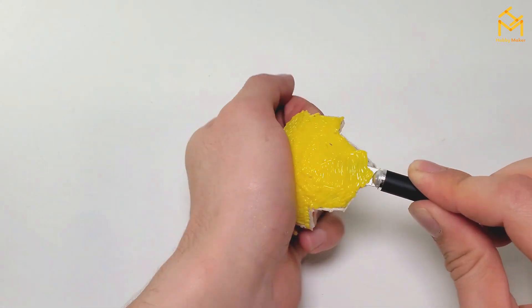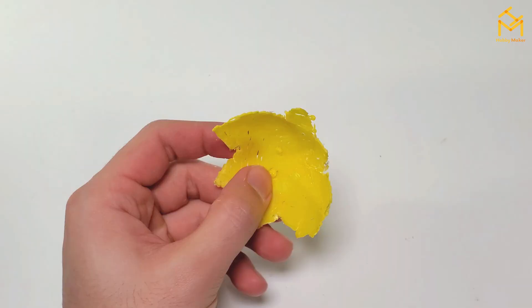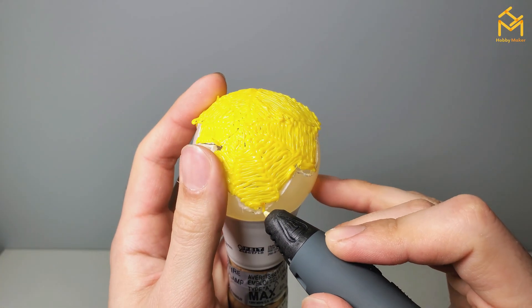Then I separated the piece like this. It sticks pretty hard, so I had to use a knife. And then I put it back onto the bulb. Glued it here like this, which also filled up the gap between.